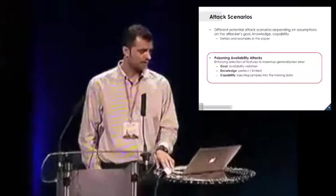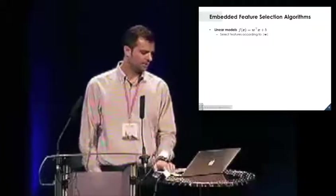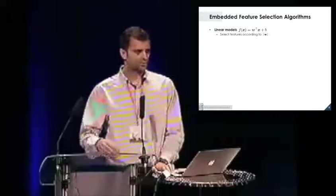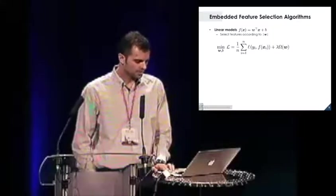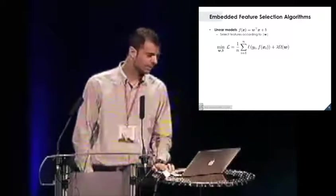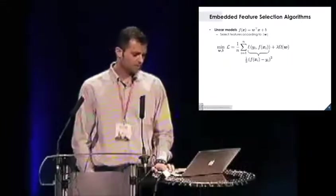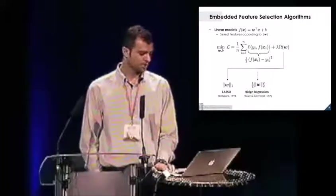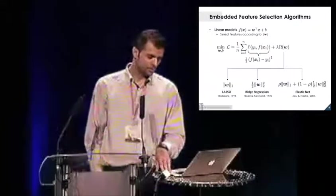We test this setting against embedded feature selection algorithms. Usually embedded feature selection works by learning a linear model on the data, either classification or regression model. You can select features by ranking them according to the absolute weight values that are assigned to the features. Usually these algorithms minimize a trade-off between the empirical loss and the regularization term. If you consider the squared loss and the L1 regularization, you have the lasso algorithm. If you use the L2 regularizer, you have the ridge regression. If you consider a convex combination of the two, you have the elastic net. These are the three algorithms that we studied in this paper.